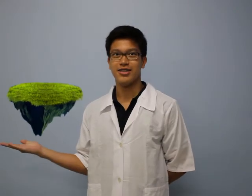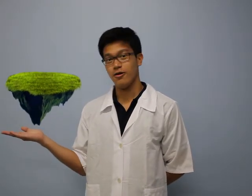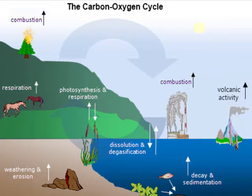Earth has four major systems. The first is the lithosphere, composing of the Earth's soil and crust. The second is the hydrosphere, composing of the Earth's water systems. The third is the atmosphere, composing of Earth's surrounding air. And last is the biosphere, composing of Earth's living components. Each of these systems carries out a certain step within the carbon-oxygen cycle, and it starts with us humans.